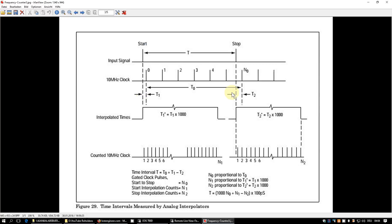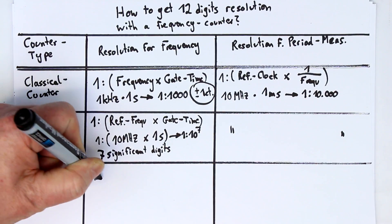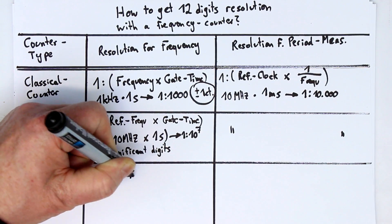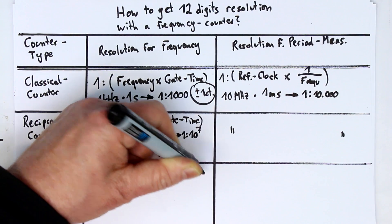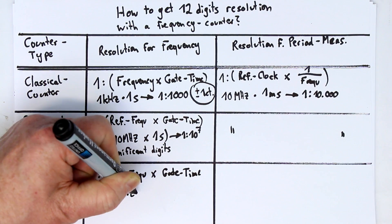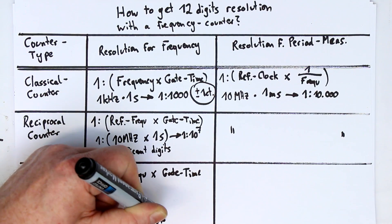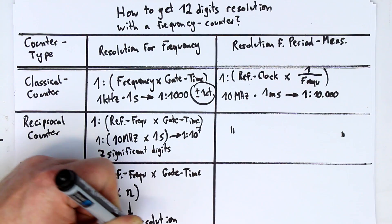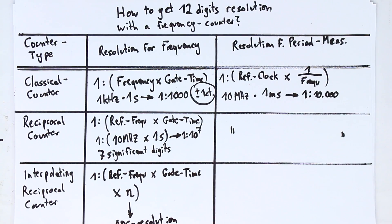And so, if we go back, this is called the interpolating reciprocal counter. And that's how, when you already have reached 7 significant digits, you can then go up to 12 digits. Because now the resolution is 1 divided by (reference frequency times gate time times n). And n is determined by either your ADC resolution, if you take a capacitor charging up, or your PLL factor, by which you multiply your reference frequency and count the extra pulses.